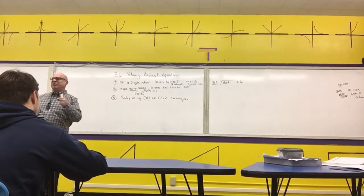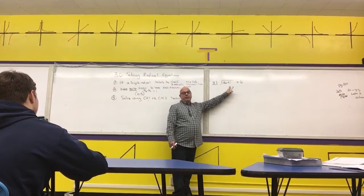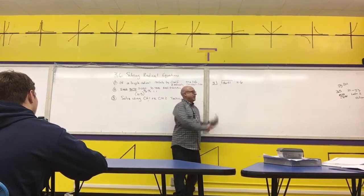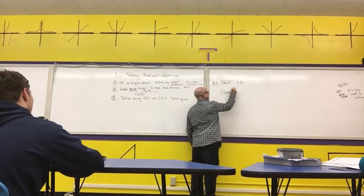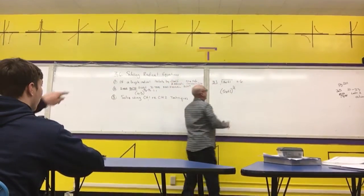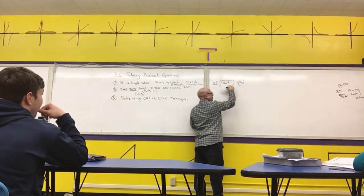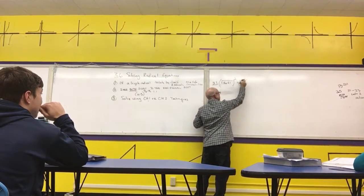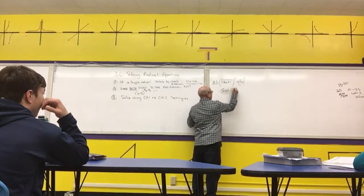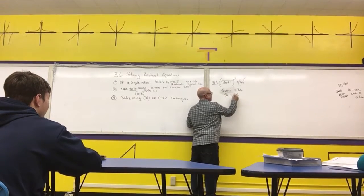Step two is to raise both sides to the power that's the reciprocal of this one. What is that? What's that power right here? How could I rewrite that? It's a one-half. So now I want to raise both sides to the reciprocal of one-half, which is two. That's going to get rid of my radical. That's going to be 36. Next step. 5x is 35. Next step. x equals 7.